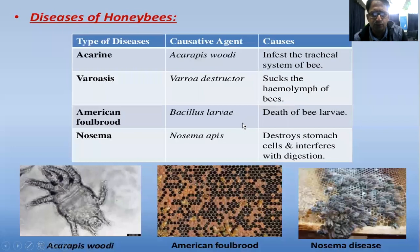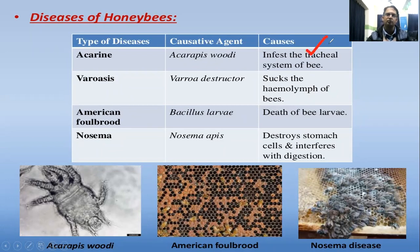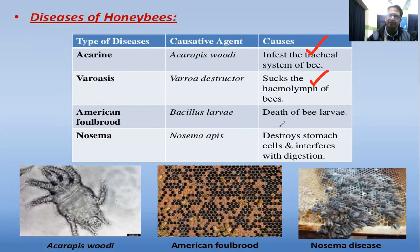Common diseases in honeybees and apiculture include acarine, varroa, American foul brood, and nosema. Acarine, caused by Acarapis, infects the tracheal and respiratory system of bees. Varroa mites parasitize honeybees and suck their hemolymph, causing decay. American foul brood is a bacterial disease that affects bee larvae.